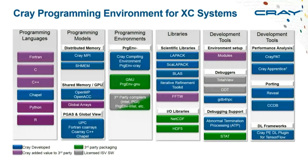Thinking about the programming environment more broadly, you have support for Fortran, C, C++, Chapel, and with CLE 6 also Python and R. This is all controlled by modules — programming environment modules for Cray, GNU, Intel, and PGI — that give you a consistent set of compilers, libraries, and MPI. Shared memory programming with OpenMP is supported, as are PGAS languages like UPC and Fortran co-arrays.